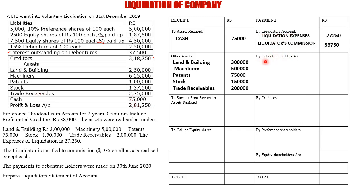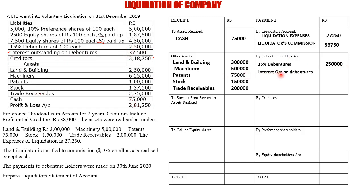After the liquidator's account, we have the debenture holder account. The 15% debentures of 100 each amount to 2,50,000. We have sufficient funds, so we pay out debentures: 2,50,000. After the debentures, there is interest outstanding on debentures of 37,500, which we also pay out.